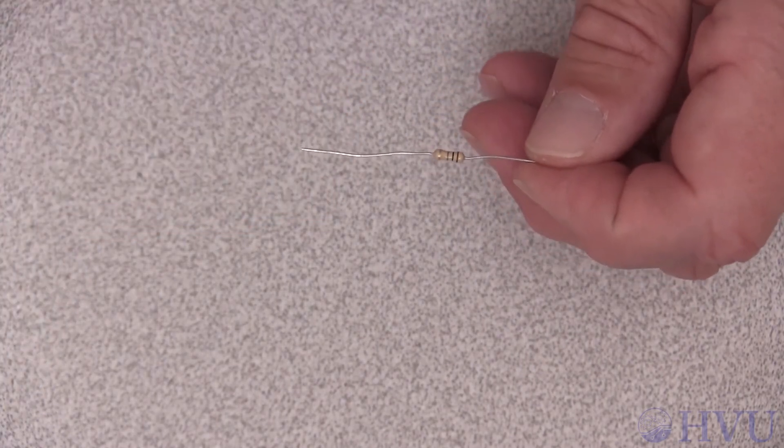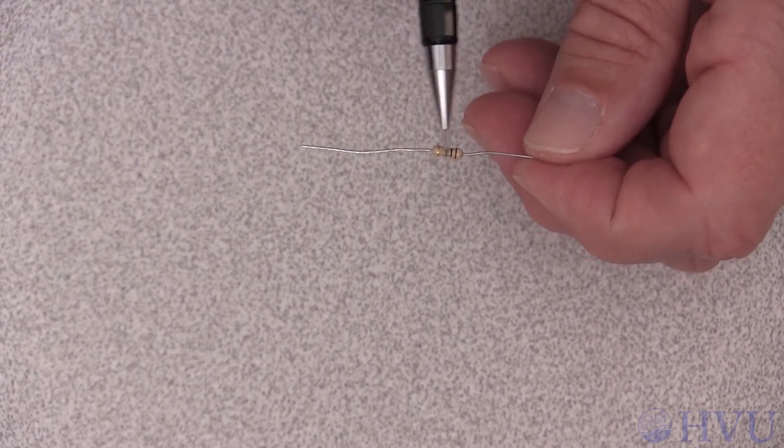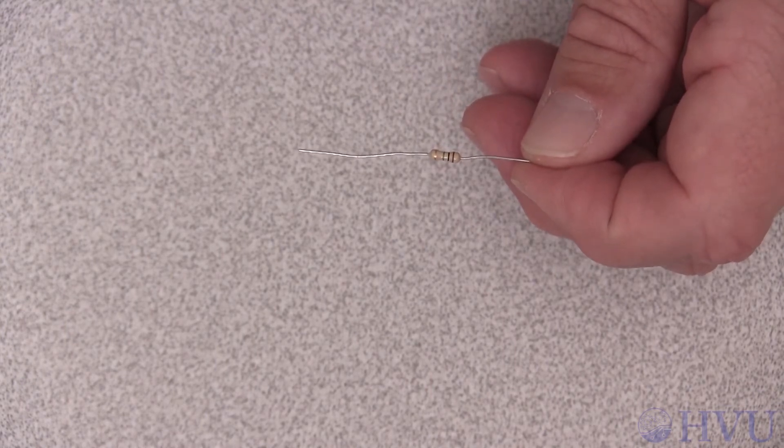Most of the resistors we'll use in this course are these small carbon resistors. The resistance of these resistors can be determined from the colored bands on their side. Next, I'll talk about determining a resistance from the resistor's color bands.